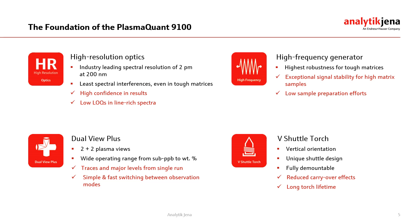The four key features of the instruments are shown here. We have integrated high resolution optics in these systems. With the aid of these optics it is possible to resolve even severe spectral interferences, which results in the lowest detection limits and highest confidence in obtained results. We have also integrated a high frequency generator with exceptional matrix tolerance, and we provide a dual view plus option which allows for a wide operating range — measuring elements from the sub-ppb up to the percentage range in a single run. We have also included a unique shuttle design which allows for high operator comfort and provides long torch lifetime. In the following I will explain these features in more detail so that you get an idea how you can benefit from them for your particular application.